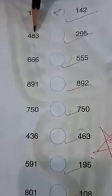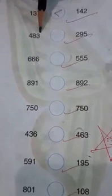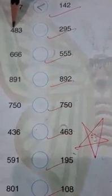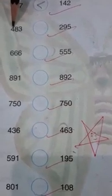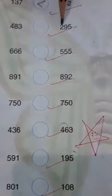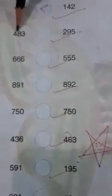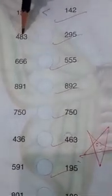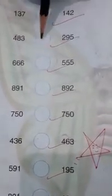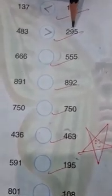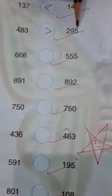Now 483 and 295. First of all we will check the numbers in the 100s place: 400 and 200. 400 is greater, so 483 is greater than 295.